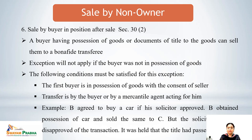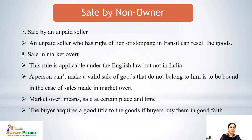Sixth exception: sale by a buyer in possession after sale, Section 30(2). A buyer having possession of goods or documents of title can sell them to a bona fide transferee. Conditions: the first buyer must be in possession of goods with the consent of the seller; the transfer is by the buyer or a mercantile agent acting for the buyer. Example: Mr. B agreed to buy a car if his solicitor approved. B obtained possession of the car and sold it to C. The solicitor later disapproved. It was held that the title had already passed to C — a valid sale.